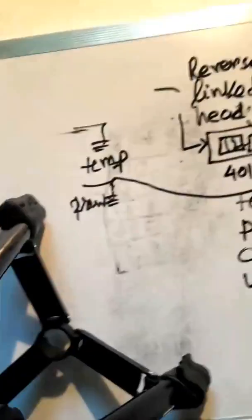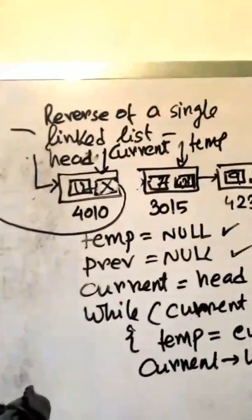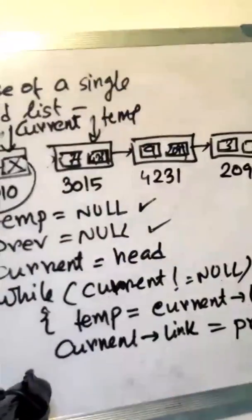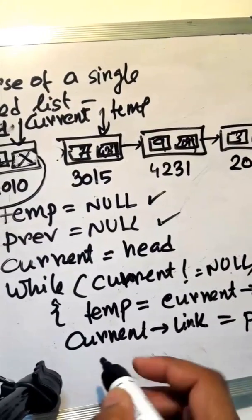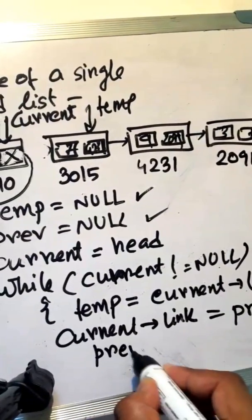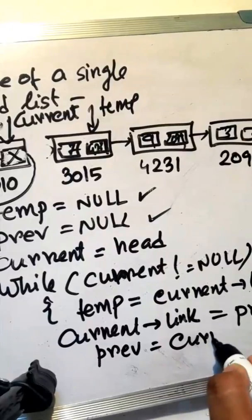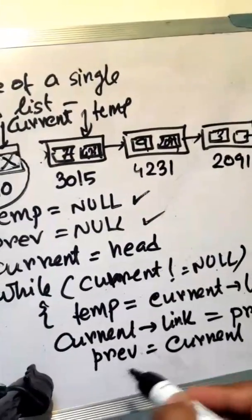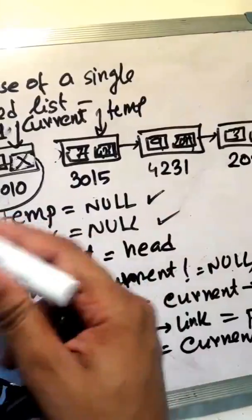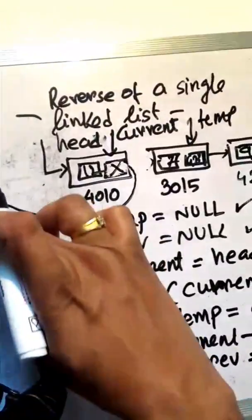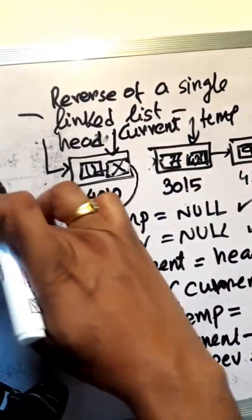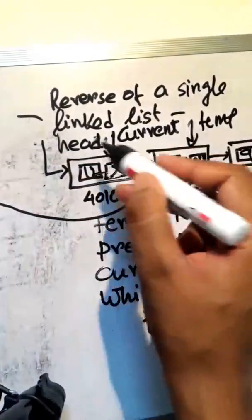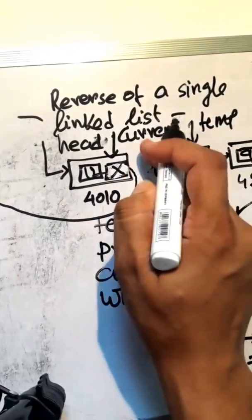This is the disconnect step — disconnect current pointer link from the next. Next step: current pointer link equals previous. Next step: previous equals current, so previous address is now current.